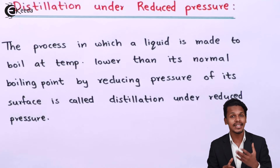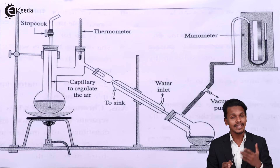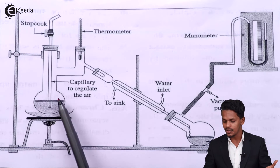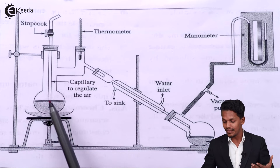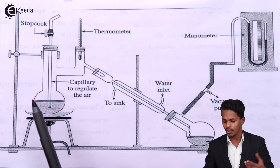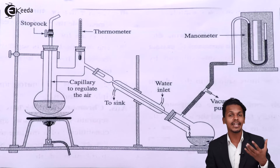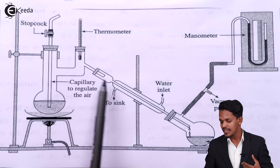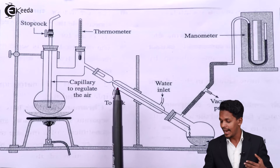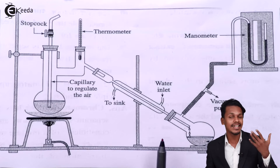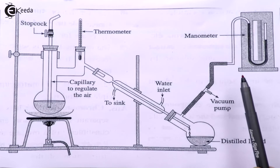Let me introduce the diagram so you can understand better. The apparatus consists of a special round-bottom flask connected to a capillary tube to regulate air. A thermometer is attached to detect the boiling point of the liquid. It is connected through a water condenser — just as in simple distillation — through which we receive the distilled or pure liquid. The apparatus is also connected to a vacuum pump and a manometer.